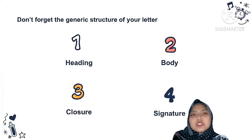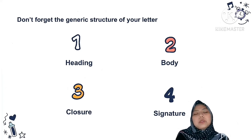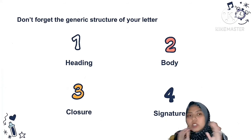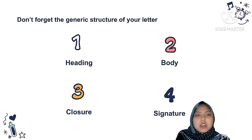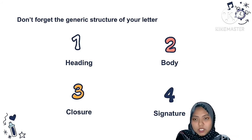Then, don't forget the generic structure of your letter. Nah, ini yang penting — saat kalian menyusun atau menulis surat pribadi, kalian harus memperhatikan generic structure-nya. Harus sesuai dengan empat poin: yang pertama ada heading, kemudian body, and then closure, and then signature.